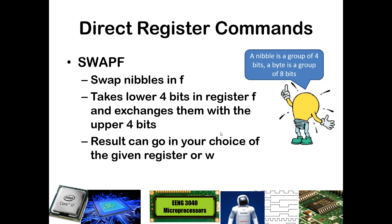SWAPF simply takes the lower nibble and swaps it with the upper nibble. So the lower 4 bits go to where the upper 4 bits were, and the upper 4 bits go to where the lower 4 bits were. Just like other commands, this result can be stored in either the W register or the particular register you are working in.